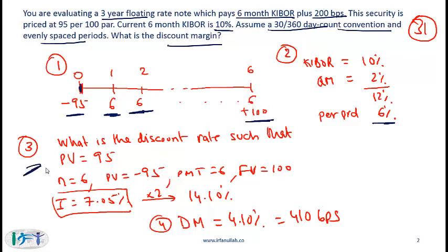Step 3 is computing the discount rate such that the present value of all these cash flows equals 95. And here rather than use the long-winded method given in the curriculum, you should use the calculator.